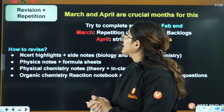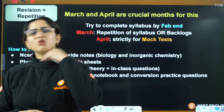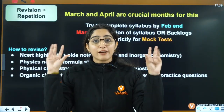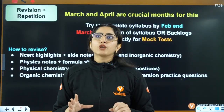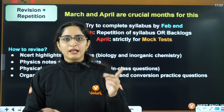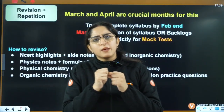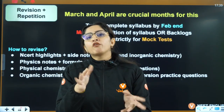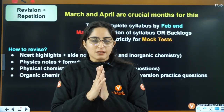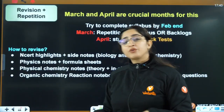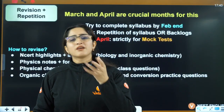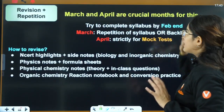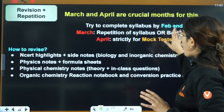The last step is revision and repetition — this is where most students lag. About 70 percent of students complete their syllabus at least once. Maybe 50 to 60 percent give a mock test. Only 40 percent analyze that test. And for revision and repetition, only 10 to 20 percent of students actually do it — and even those who do are often doing it in the wrong way. March and April are crucial months. Syllabus backlogs must be completed by April strictly, and from then it's focused mock tests.